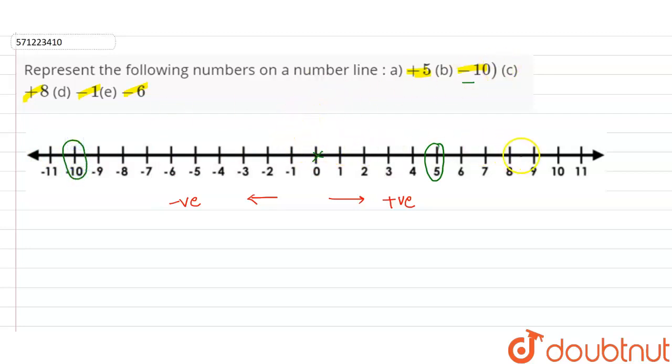Now, C part is plus 8. So, plus 8 is to the right hand side of 0. So, plus 8. Now, minus 1 to the left hand side of 0. So, this is minus 1. And minus 6 is again to the left hand side. So, this is minus 6.